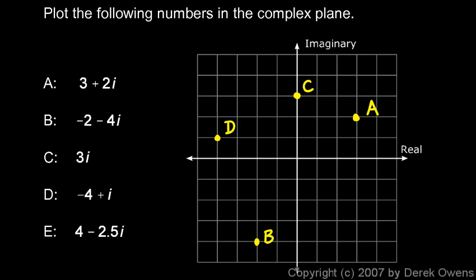And point E is 4 minus 2.5i. That's positive 4 on my real axis. And then minus 2.5 is going to take me to here. I don't end up exactly on a grid point, and that's okay. So that's point E. So there's five points plotted in the complex plane.